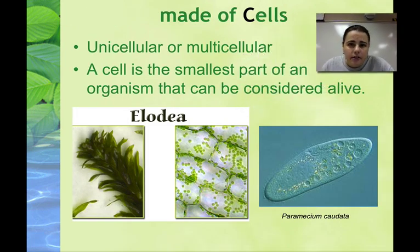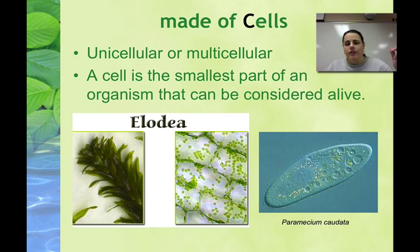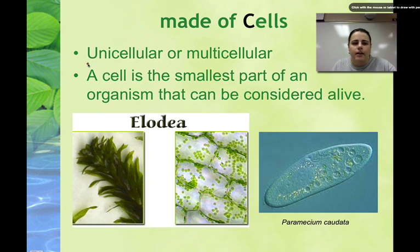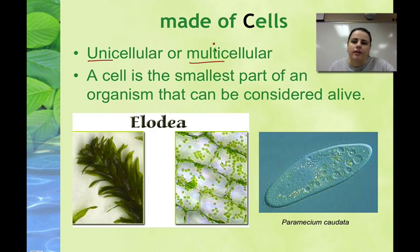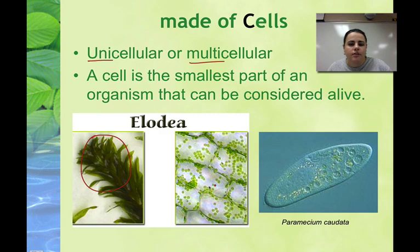All living things are made of cells. Cells are the basic unit of life — nothing smaller than a cell can be considered alive. Living things are made of either one cell or more than one cell. One cell is unicellular; many cells is multicellular. We are multicellular, as are plants, fungi, and some protists. This is Elodea — you can see lots of cells under a microscope. A paramecium is a single-celled protist and is unicellular.